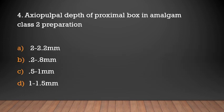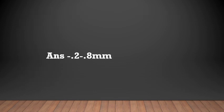Axial pulpal depth of a proximal box in amalgam class II preparation. Options: 2 to 2.2 mm, 0.2 to 0.8 mm, 0.5 to 1 mm, or 1 to 1.5 mm. The answer is 0.2 to 0.8 mm. Axial pulpal depth of the proximal box in class II preparation is 0.2 to 0.8 mm.